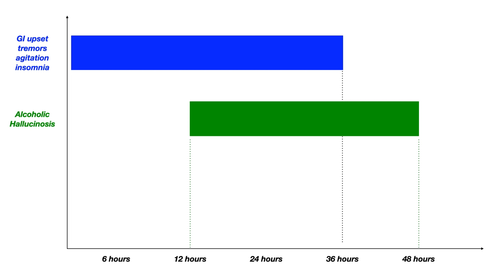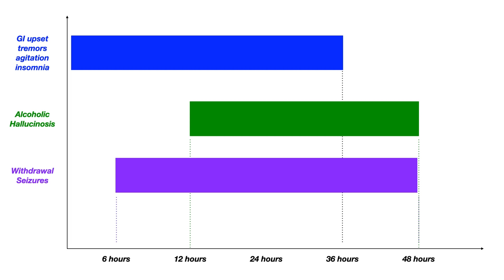Alcoholic hallucinosis occurs between 12 and 48 hours. Withdrawal seizures, which are very severe, occur between 6 and 48 hours. And then the most severe of all these syndromes, delirium tremens — commonly referred to as DTs — occurs at 48 hours and beyond. In DTs, you have delirium, so orientation is no longer intact. The person does not know their name, does not know where they are, does not know the situation.